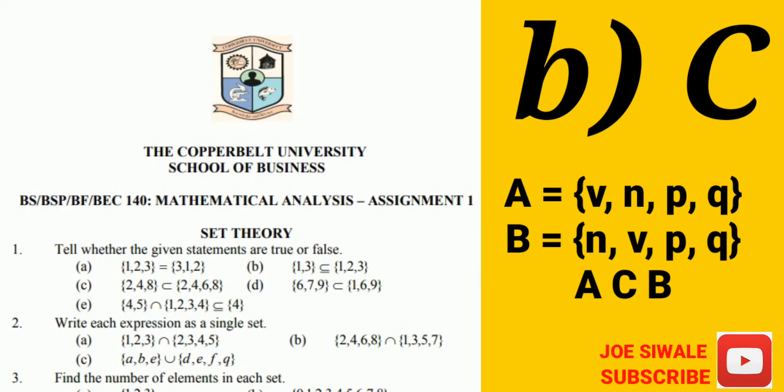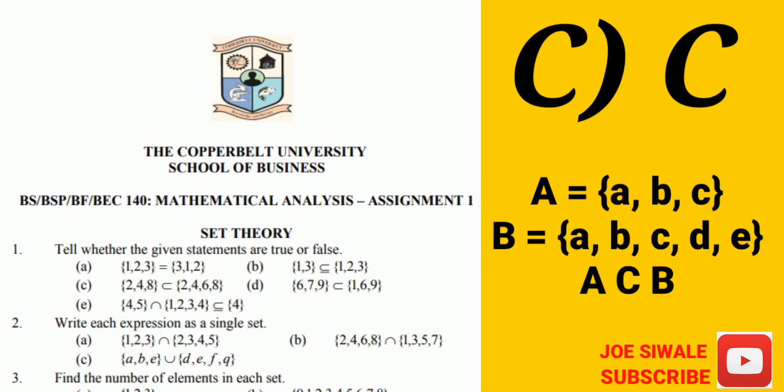Then for question C, I have the sign of a proper subset. Set A is said to be a proper subset of set B if all the elements in set A are found in set B, but there are some elements in set B that are not found in set A.